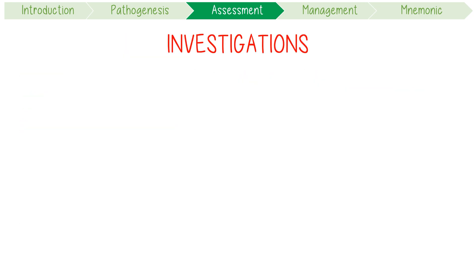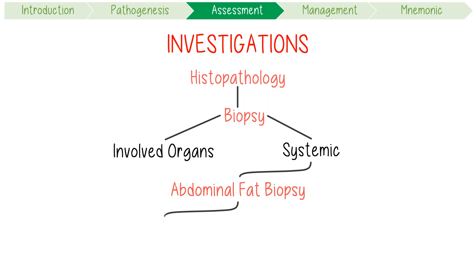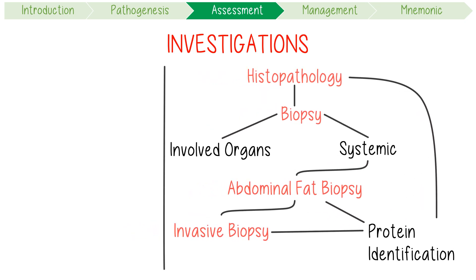Investigations and diagnosis of amyloidosis revolves around histopathological identification of the amyloid deposits, mostly with a biopsy. You could biopsy the involved organs, but especially in systemic forms, deposits can be found all over the body. Consequently, sometimes the most easily accessible tissue to biopsy — positive in more than 80% of patients with systemic amyloidosis — is abdominal fat. If this is negative, more invasive biopsies can be considered. If either are positive, the precursor protein type must be determined by mass spectrometry or immunohistochemistry.